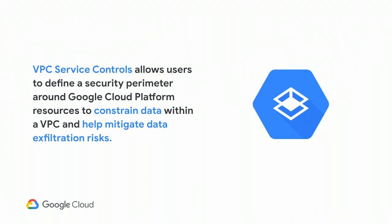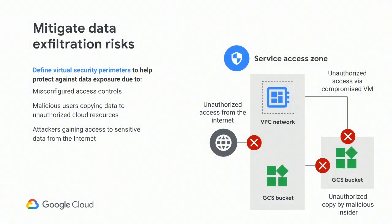Another tool to control access and permissions around data on cloud is VPC service controls. This allows you to define a security perimeter around Google Cloud Platform resources to constrain data to that perimeter, control when data leaves or comes into that perimeter, and help mitigate data exfiltration. For example, if you have a GCS bucket and you only want it accessed within services in a specific network, you would configure VPC service controls so that services that should access the data are on the same network, and services that shouldn't are outside it — and it auto-rejects anything coming in that isn't already on that network.